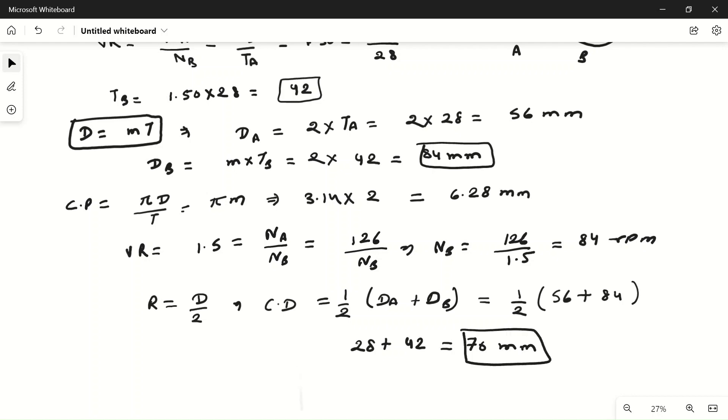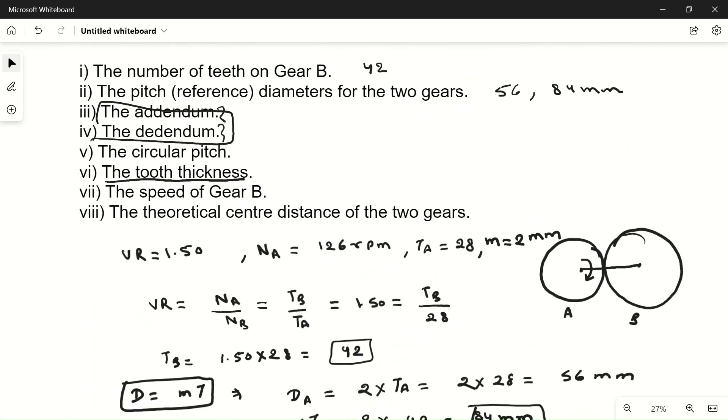We have calculated all the values. These three values we have not calculated because enough data is not given, so you can directly see from the table of standard gears the number of teeth and module, and you can directly find from the table the addendum and dedendum and tooth thickness. I hope you understood this problem. If you have any doubt, please ask in the comment section. Thanks for watching this video.